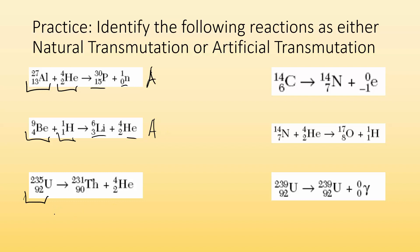Here I have one nuclei all by itself, and it's spontaneously breaking up into a new element and a particle. That tells me it's a natural transmutation. Did it on its own. Same thing with this next example. I started with carbon-14 all on its own, and it spontaneously broke down into a new element and gave off a particle. That is also a natural transmutation.